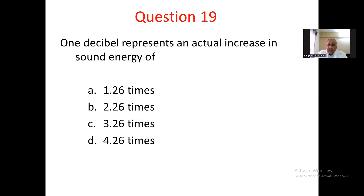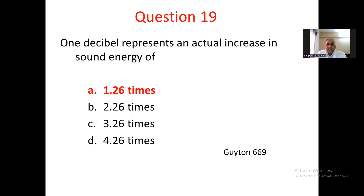Question number 19. One decibel represents an actual increase in sound energy of: A. 1.26 times, B. 2.26 times, C. 3.26 times, D. 4.26 times. The answer is 1.26 times.